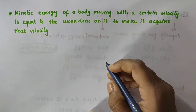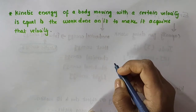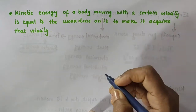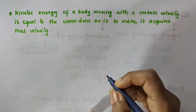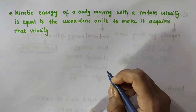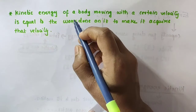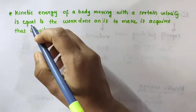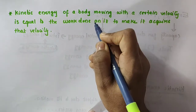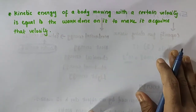Now, how can we calculate the energy possessed by a moving body by virtue of its motion? That is, how can we calculate the kinetic energy of a moving body? A moving body has some velocity. The kinetic energy of a body moving with a certain velocity is actually equal to the work done on the body to